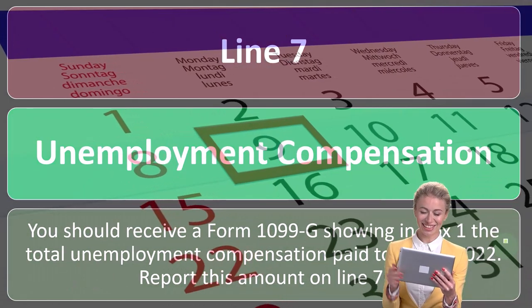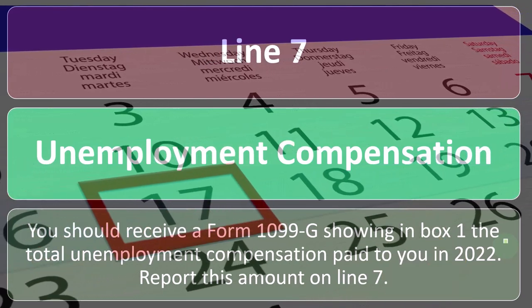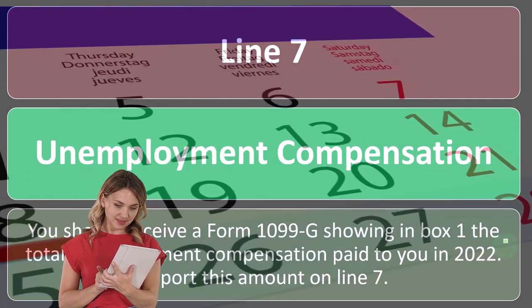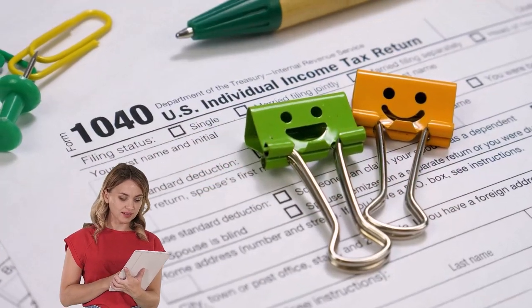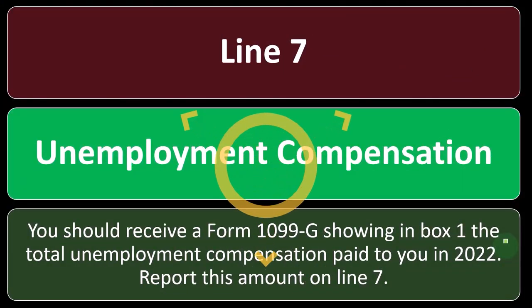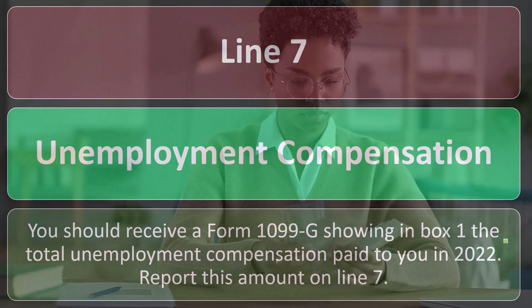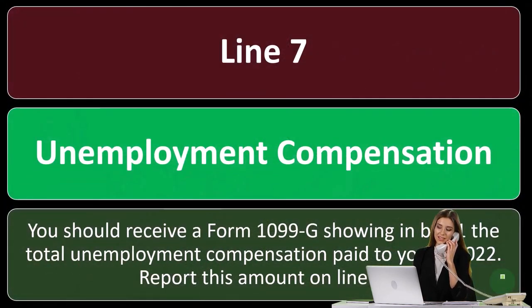Also note that if someone got laid off in the middle of the year, the withholdings for that partial year — say three months — are going to be very high compared to three months of income. We have a progressive tax system, so if they were projected to earn a hundred thousand dollars but only worked three months, the withholdings were based on that full yearly salary. They over-withheld, and then they pick up unemployment compensation with probably no withholding — so those two things may balance out, but it's a messy situation to predict.